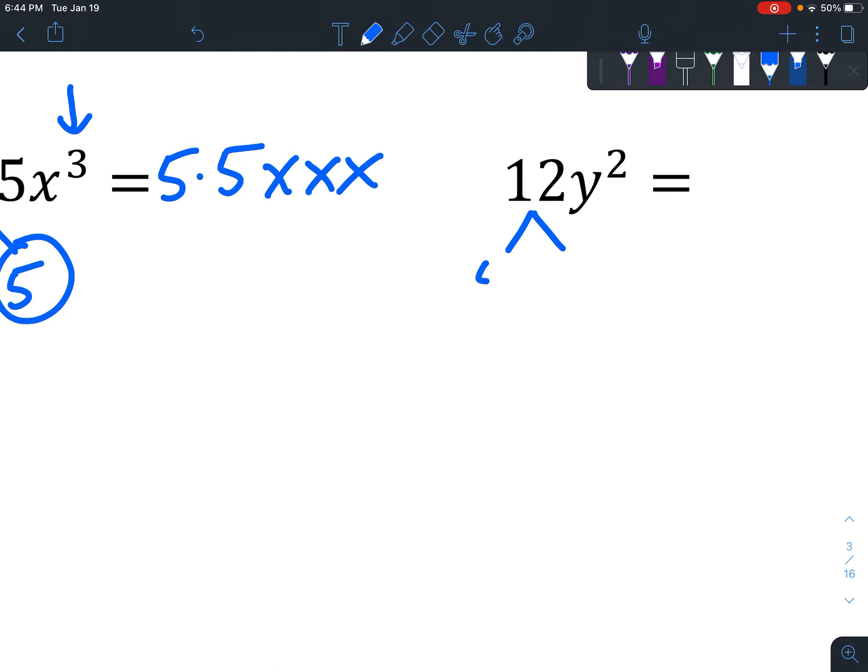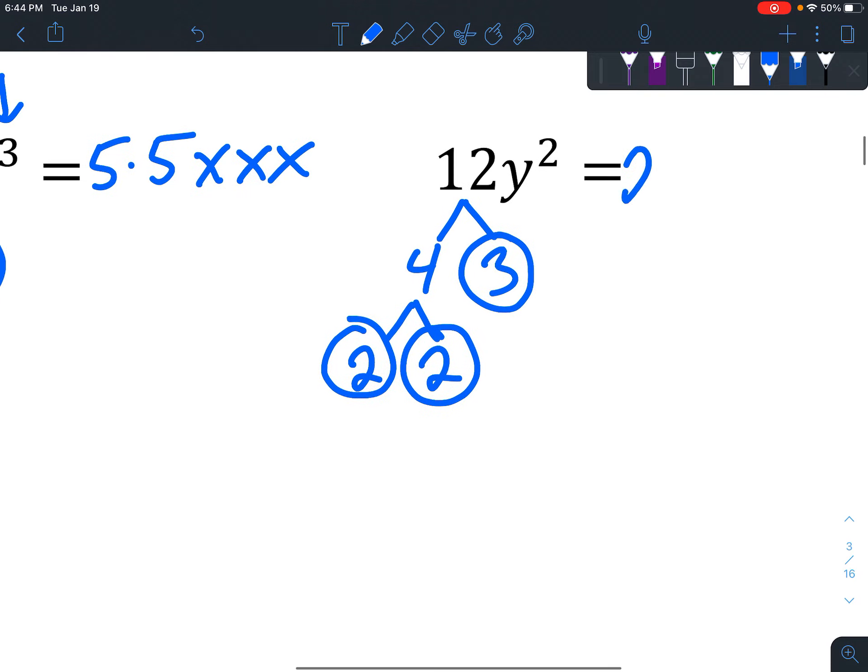12 is 4 times 3. And 4 is also 2 times 2. You don't actually write 1 times 3 because when you multiply by 1, it doesn't actually change anything. And 1 is not included as one of the prime factors. So 2 times 2 times 3 and two y's multiplied together.